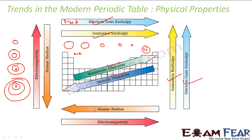Atomic radius decreases as we have drawn. Electronegativity also follows the same pattern as electron gain enthalpy or ionization enthalpy.